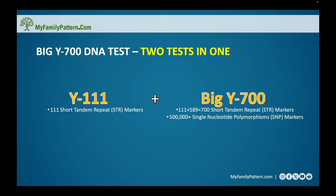When you get the Big Y700 DNA test, the great thing about it is it's actually two tests in one. If you've looked at the Family Tree DNA website you've probably seen these two different tests. If you order the Big Y700 you get the Y111 as part of it. The Y111 test tests 111 short tandem repeat markers, or STRs. The Big Y700 includes those initial 111 STR markers plus an additional 589, for a total of 700 — that's where the test gets its name. It also includes over 500,000 single nucleotide polymorphisms, or SNPs.